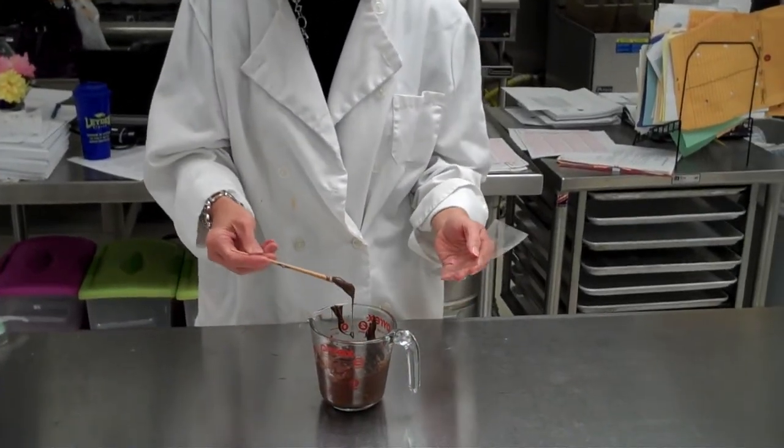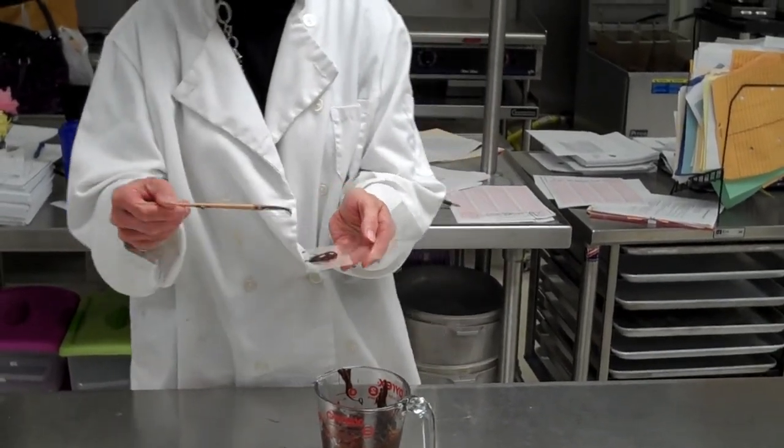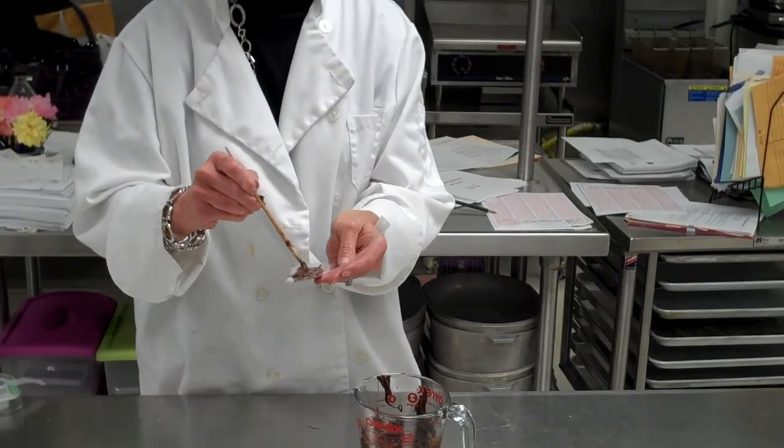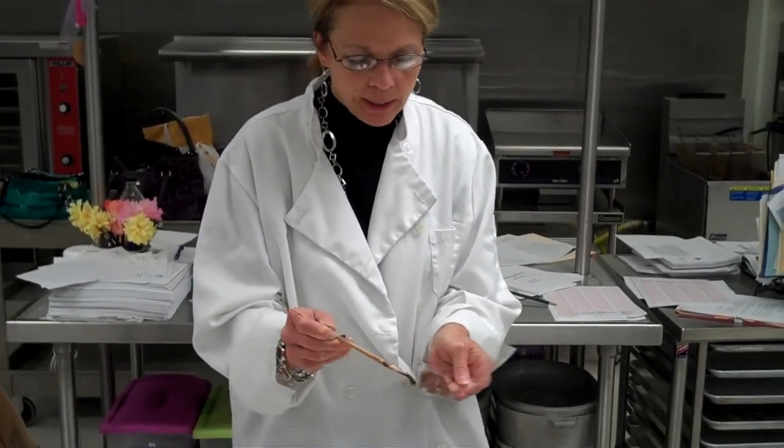Now, the trick here is you're going to paint a rectangle of chocolate. I'm just putting a blob - that's an official culinary word, by the way - of chocolate on here, and you're going to paint it on.